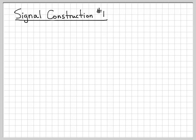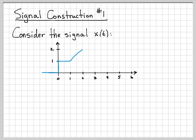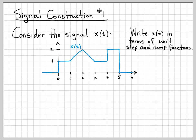By construction, I just mean let's construct an equation or an expression that represents a given signal. The signal x(t) that we're going to work with looks like the following - this blue curve right here. What we are asked to do is write x(t) in terms of unit step and unit ramp functions.